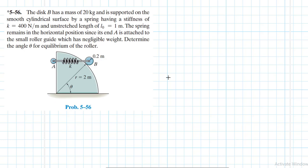The spring remains in the horizontal position since its end A is attached to the small roller guide which has negligible weight. Determine the angle theta for equilibrium of the roller.